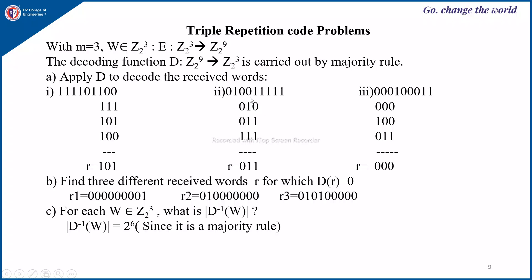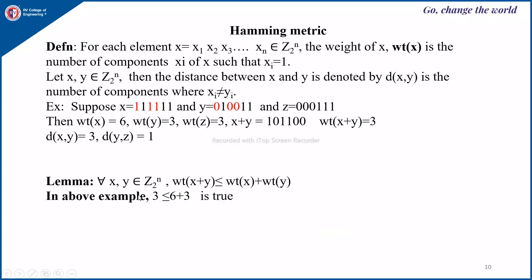Similarly: 3 bits 0 1 0, next 3 bits 0 1 1, next 3 bits 1 1 1 — according to the majority rule, majority is 0, then 1, then 1. This is the decoded word. Likewise, if you take another received word, you will be decoding it as 0 0 0.